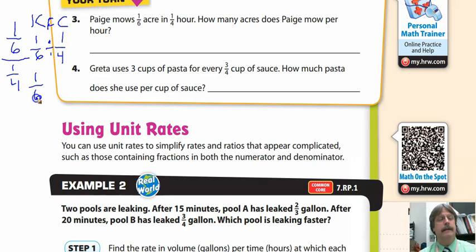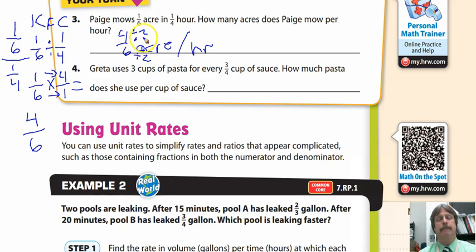So now it's going to become one-sixth times four over one. Now I just multiply straight across. Paige is going to mow four-sixths of an acre per hour. We know we can reduce this. What number goes into both four and six? That's two. What you do in the numerator, you do in the denominator. Four divided by two is two, and six divided by two is three. So it's two-thirds of an acre per hour.